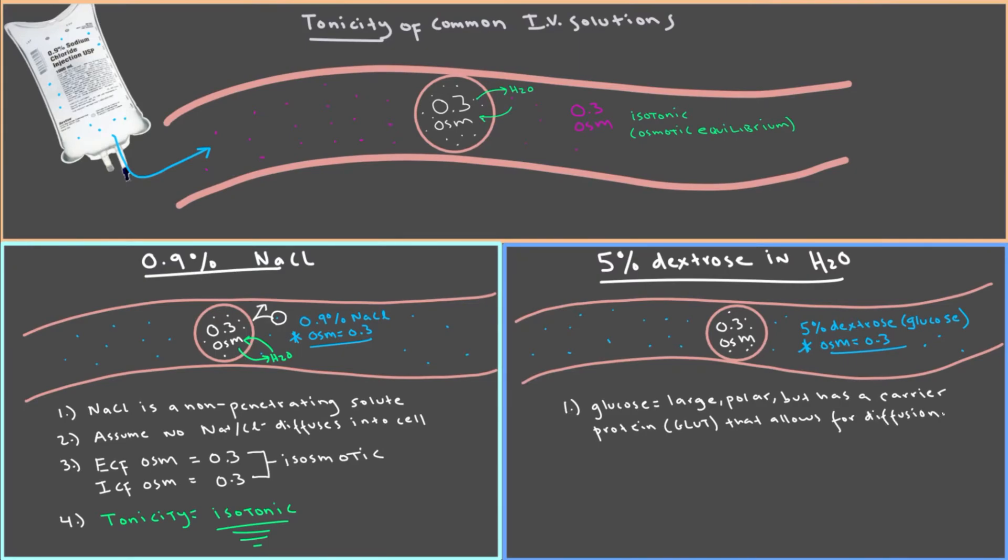So normally glucose or dextrose cannot get into the cell on its own. But by getting help from this GLUT protein transporter, this special door that allows glucose to get in, we're going to consider glucose to be permeable. We're going to consider glucose to be able to cross the cell because of this GLUT transporter. Let's let glucose cross the cell by diffusion because now we know that it can using GLUT.